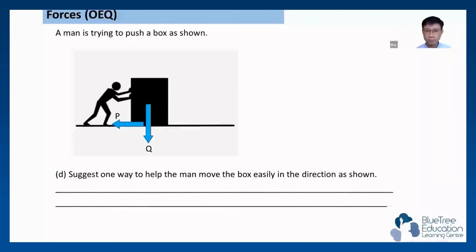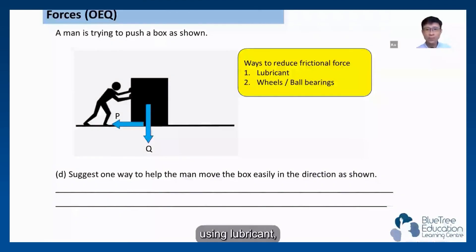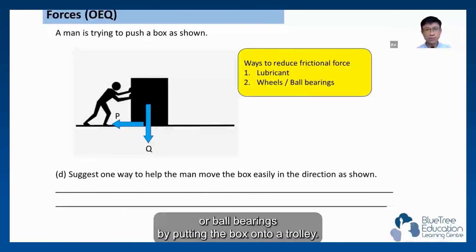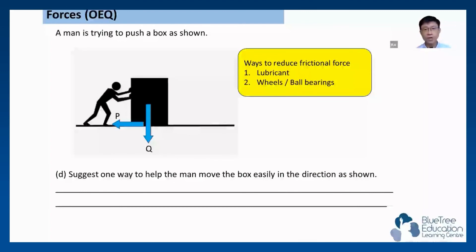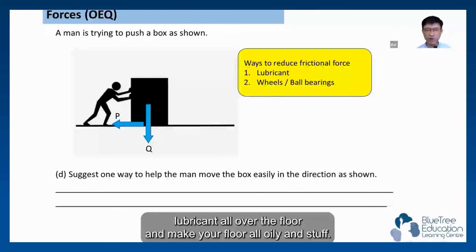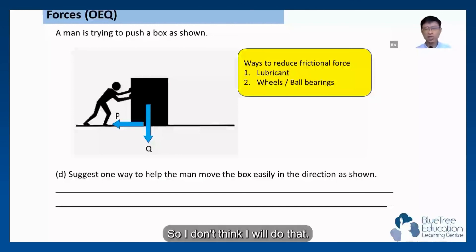One will be using lubricant, the other will be using wheels or ball bearings. So in this case, I can easily use wheels or ball bearings by putting the box onto a trolley. Now I will not put lubricant in this case. Would you want to put lubricant all over the floor and make your floor all oily and stuff? So I don't think I will do that.